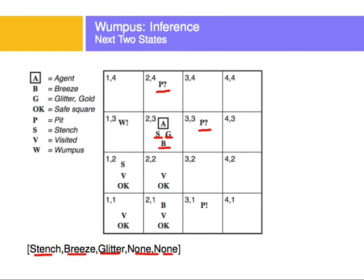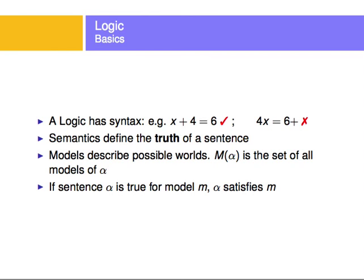That is the concept of a logical game and knowledge-base agent. Two more important things: first, a logic has a syntax. For example, x + 4 = 6 is good math syntax, but '4x = 6 +' is not valid math syntax. Similarly, the logic of our knowledge base will have a syntax. The semantics of a logic define the truth of a sentence — an assertion — the meaning of whether the assertion is true or not.